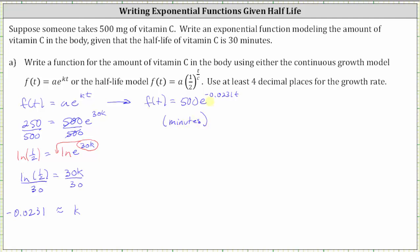Now let's find k when we use time in hours. When time t is in hours, we need to recognize that 30 minutes is equal to one-half an hour, or 0.5 hours. So to find k when the time is in hours, we set up the equation as 250 equals 500 times e to the power of kt, but now t is one-half or 0.5, giving us an exponent of one-half k.